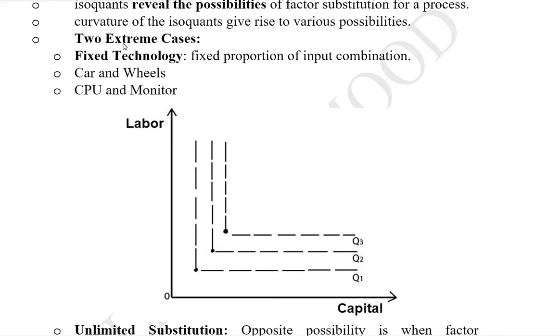The first of the two extreme cases is the fixed technology isoquants. These are also known as the fixed proportion production function because they allow the input combinations in a certain proportion that doesn't change.